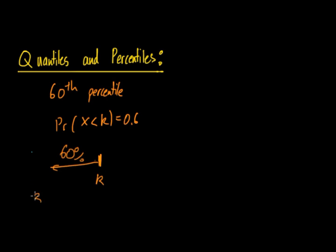Then let's say the 30th percentile. Once again you have K and the chance of that number being less is 30 percent.